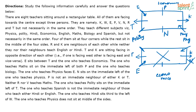P is not an immediate neighbor of K or T. That means this is the only place I can fix P. I can't keep P here because P is not an immediate neighbor of T, and I can't keep P here because P is not an immediate neighbor of K. So the only logical place to put P is this position.